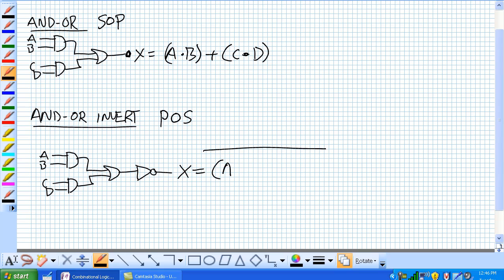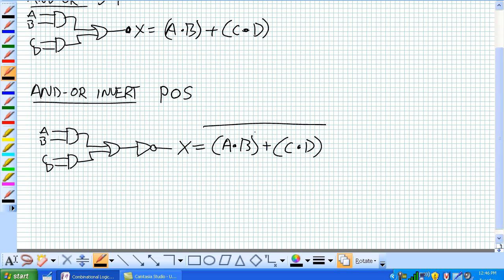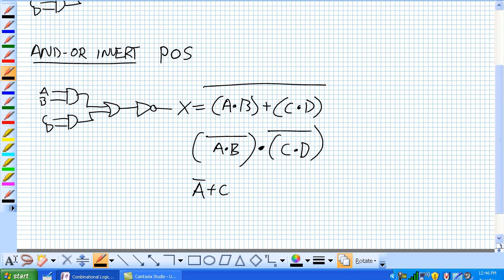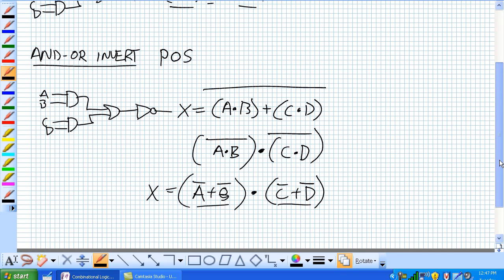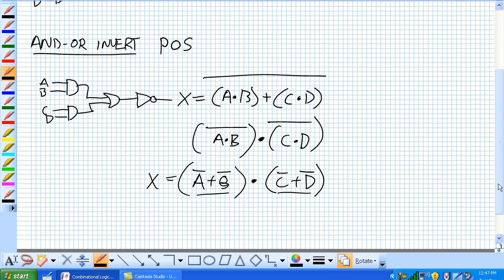This right here in our SOP, this output X equals A and B or C and D. Nothing too complicated about this, but now check this out. Here, the output is inverted of that same expression. Now, use DeMorgan's theorem where we can get rid of this over bar negation and then get rid of those again. That needs to be a B. So, what does that look like? Well, that's a sum. That's a sum anded together. That's the POS, the product of sums. Where this was up here was the sum of products. So, and or invert can be used to implement POS expressions.